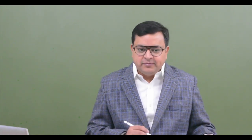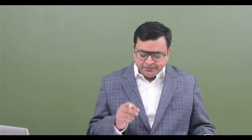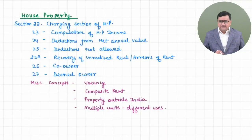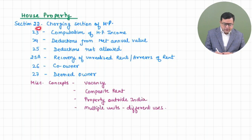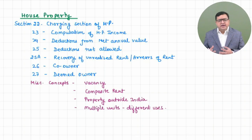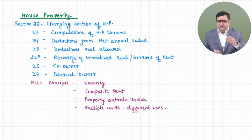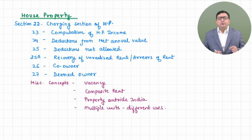This chapter comprises very few sections, starting from Section 22 of the Income Tax Act till Section 27. Section 22 is the charging section for house property. Let's understand the contents of this chapter. Section 22 is the charging section. Section 23 tells you how to compute your house property income, especially your gross annual value.